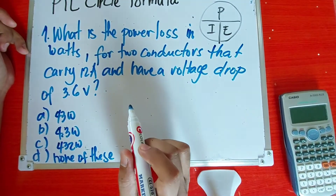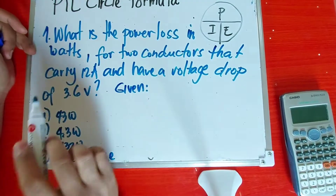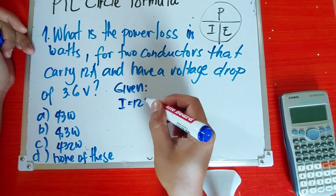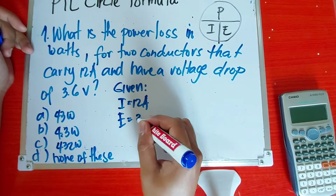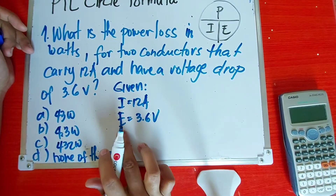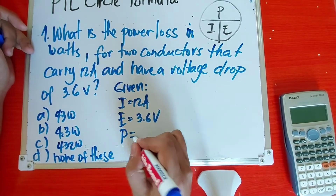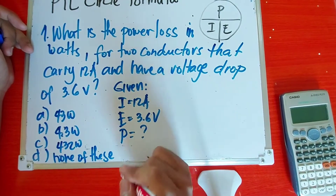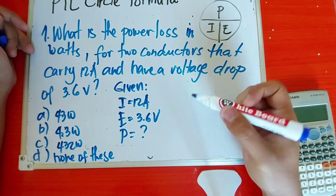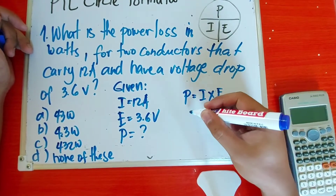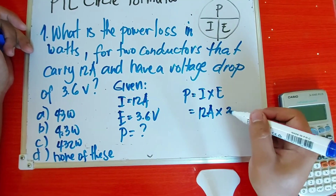So sa problem, kailangan mo muna tignan kung ano yung mga given. Given niya, mayroon siyang current na 12 ampere. Next given, mayroon siyang voltage drop na 3.6 volts, so E is 3.6 volts — E or voltage, pareho lang yun, that is electromotive force or voltage. So, nawawala dito is power. Babalik tayo doon sa PIE-circle formula. Nawawala yung letter P, so power — takpan mo lang siya, I times E yung formula natin. Power is equal to I times E.